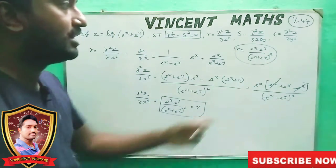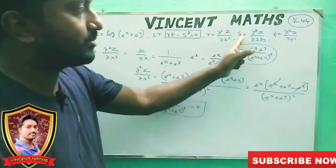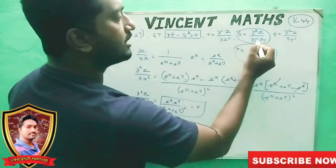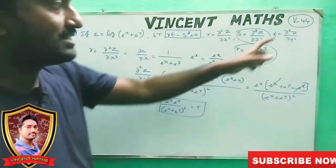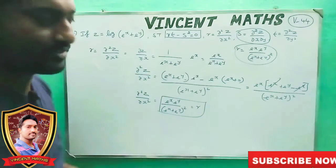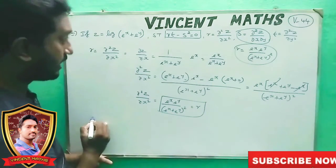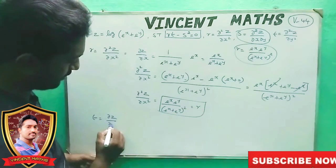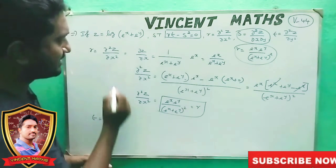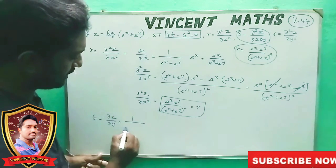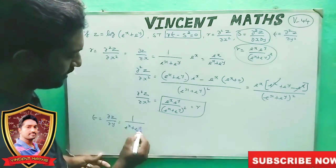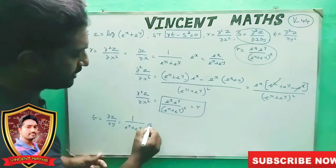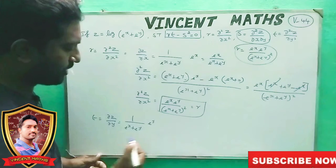Next, we differentiate the answer with respect to y — that is the t value. dou z by dou y: 1 by e power x plus e power y, then e power x differentiates to zero, so e power y remains. If we differentiate the answer, e power x is zero, so we get e power y.